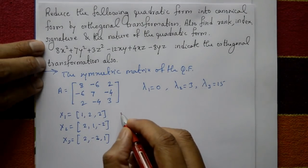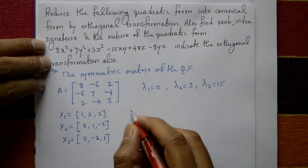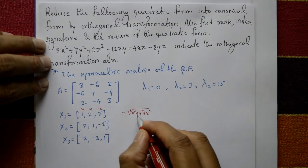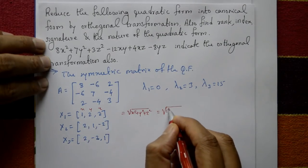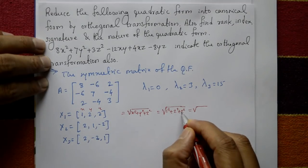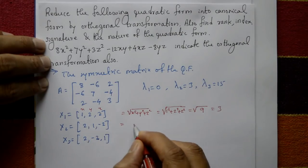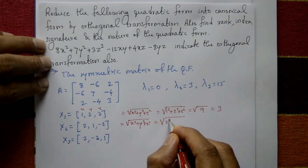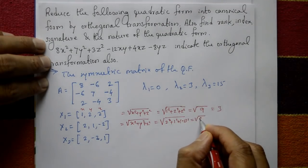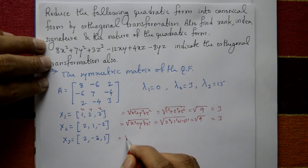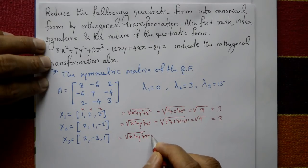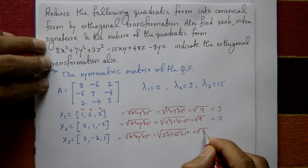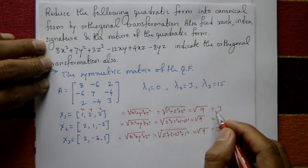Now find the normalized eigenvectors. For x1 = (1, 2, 2): the norm is √(1² + 2² + 2²) = √9 = 3. For x2 = (2, 1, −2): norm is √(4 + 1 + 4) = √9 = 3. For x3 = (2, −2, 1): norm is √(4 + 4 + 1) = √9 = 3. All norms are equal to 3.